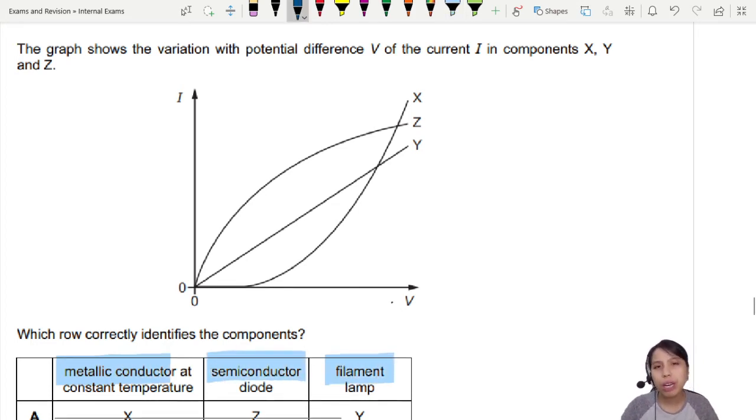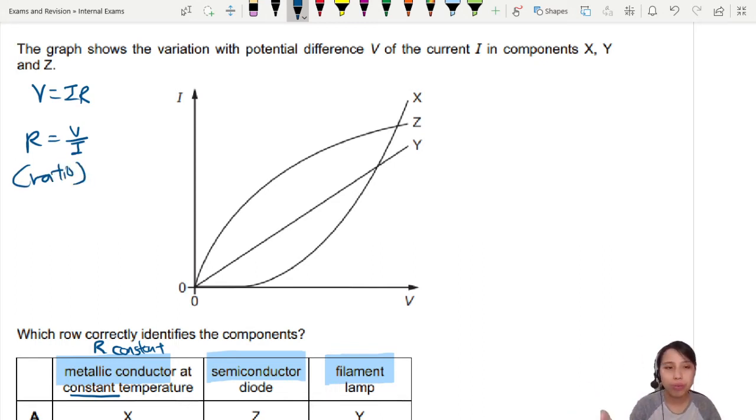Now you kind of have to know the properties of these three types of materials when they have electricity going through them. Metallic conductor R is always constant if your temperature is constant. What is R by the way? From Ohm's law VIR. So R equals V over I and this is the ratio, just V divided by I. It's not gradient, it's ratio V divided by I.